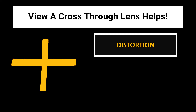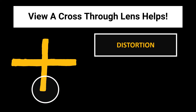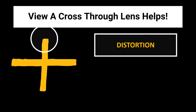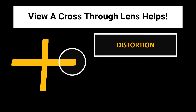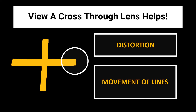Place the lens and look for distortion of the image. Then move the lens in various directions across the cross. As you move the lens, observe in which direction the image of the cross moves. Based on that movement, you can identify the type of lens.